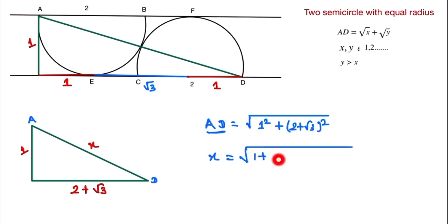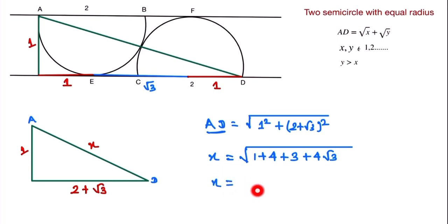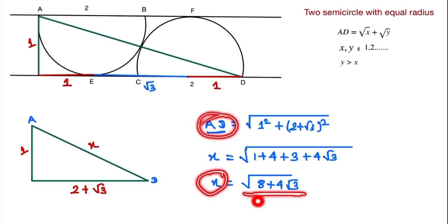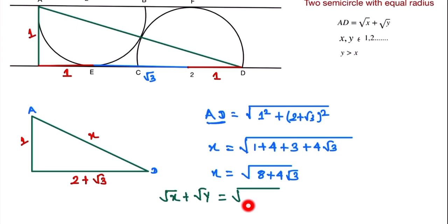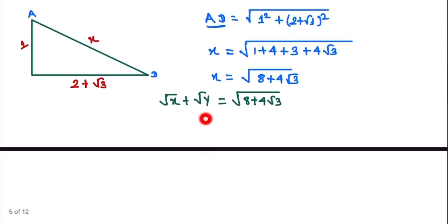Expanding (2 + √3)²: we get 4 + 3 + 4√3. So AD² = 1 + 4 + 3 + 4√3 = 8 + 4√3. Therefore AD = √(8 + 4√3). We now write this in the form √x + √y, so √x + √y = √(8 + 4√3).